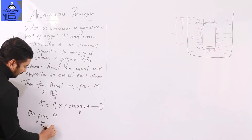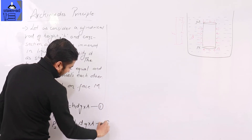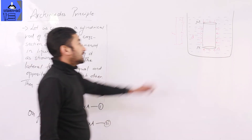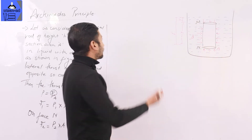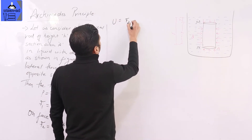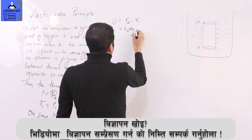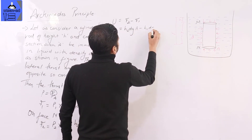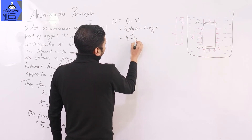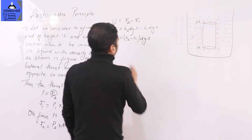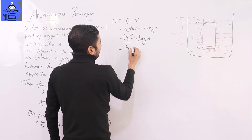So F1 = H1·D·G·A — that is equation one. On the top face, F2 = P2 times A, which equals H2·D·G·A — equation two. The net vertical thrust equals the upward thrust minus the downward thrust, so upthrust equals F2 minus F1. F2 = H2·D·G·A and F1 = H1·D·G·A. Taking common factors: thrust = (H2 - H1)·D·G·A.